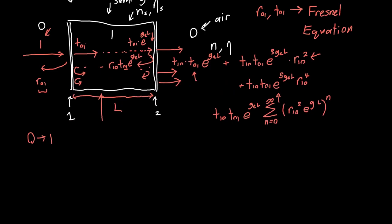And this is just a geometric series, so we can actually evaluate what this is. This is just T_10 T_01 E to the G_E L, or let's say G L over 2, divided by 1 minus R_10 squared E to the G_E L. And we can write this now as our total electric field in terms of our incident electric field.